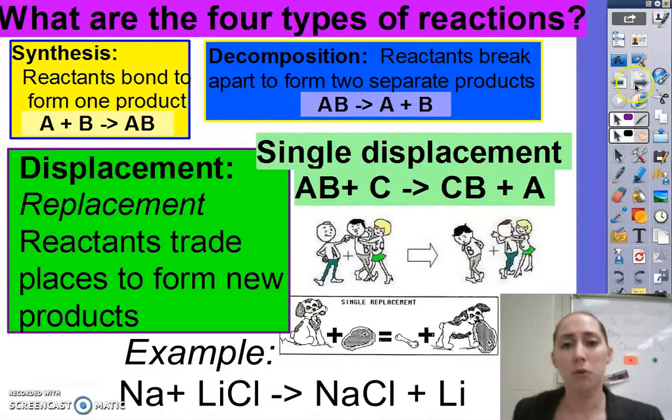Now our third and fourth type of reaction is called a displacement, sometimes called replacement equation as well. This is where reactants will trade places to form new products. So in a single displacement, you've got a compound and a single element, and then it switches to become a new compound and a single element. So here with our dating analogy, you've got two people dating, someone else comes along, and then he takes the place of the other one. So now this one's all sad and single, and these ones are a happy couple.